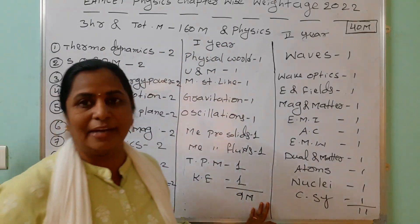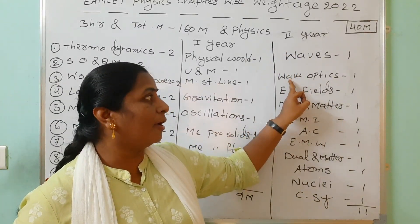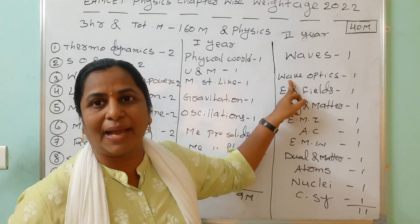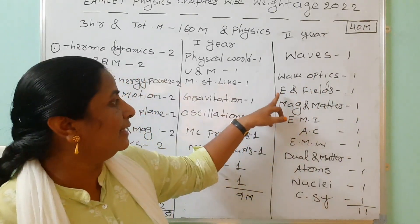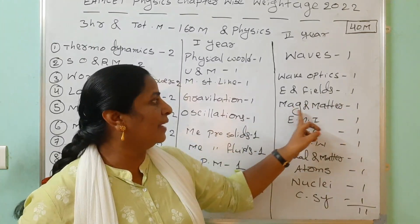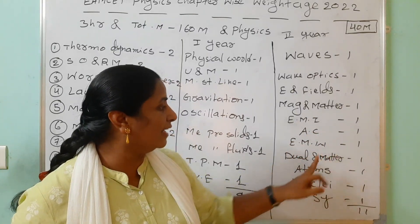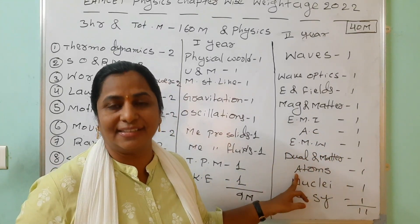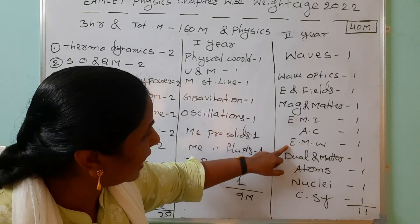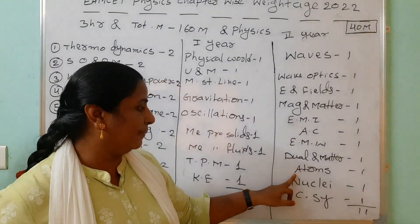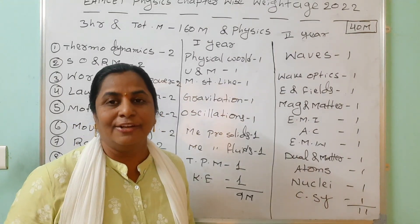Coming to second year topics — waves and wave optics. Wave optics is somewhat difficult but you have to stress on maximum amplitude, minimum amplitude, maximum intensity, and minimum intensity. Electric charges and fields — you are expecting one. Magnetism and matter — one. Electromagnetic induction, alternating current, electromagnetic waves, dual nature, atoms — these are also important. If you are reading these in first year it is a benefit for both physics and chemistry.